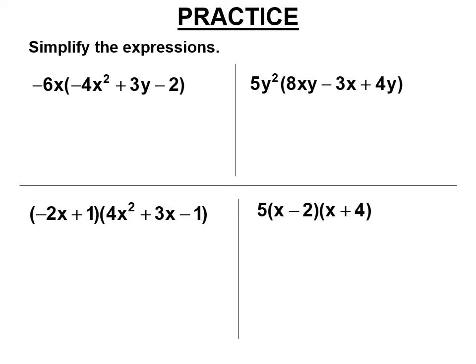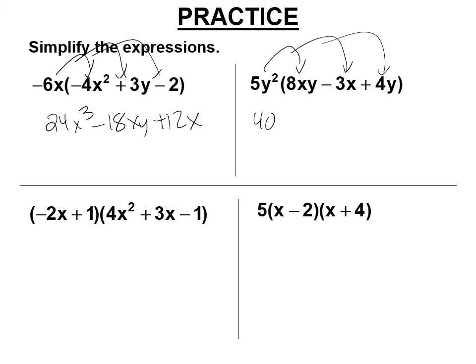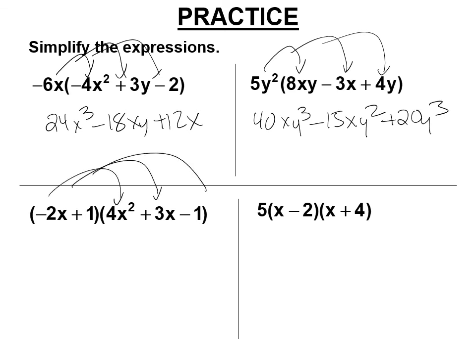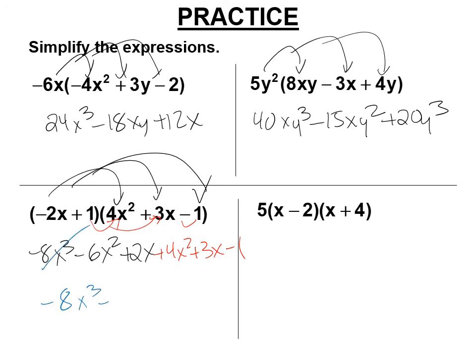Let's practice. Distributing the negative 6 gives 24x cubed minus 18xy plus 12x. Distributing the 5y squared gives 40xy cubed minus 15xy squared plus 20y cubed. Here you have to distribute both negative 2x and 1: we get negative 8x cubed minus 6x squared plus 2x, then distributing the 1 gives plus 4x squared plus 3x minus 1.